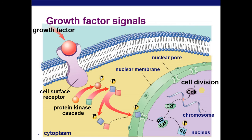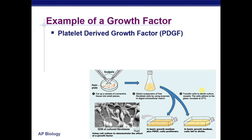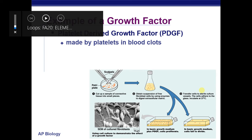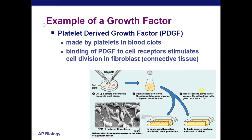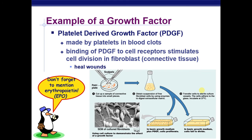One example of a growth factor is platelet-derived growth factor, which is really important. It's made by platelets in blood clots — a platelet that has bound to damaged tissue or started to form a clot sends it out to stimulate the cell division of fibroblasts, which are connective tissue cells, to heal over the injury and to recruit more platelets to help plug it up.